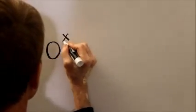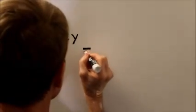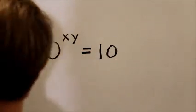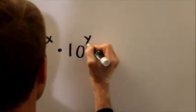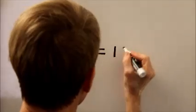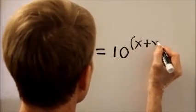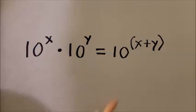Well, from your algebra, remember that if you have ten to the x times ten to the y, where x and y are real numbers, then you have ten to the x plus y. In other words, the product of powers of the same number is equal to that number raised to the sum of the exponents.